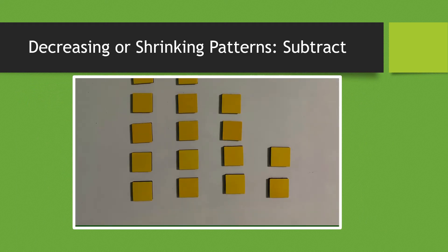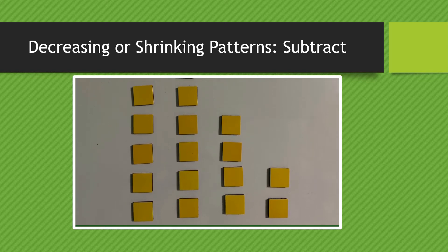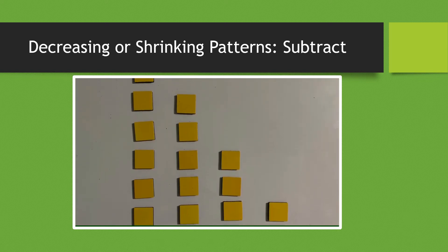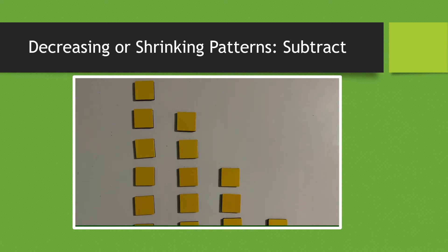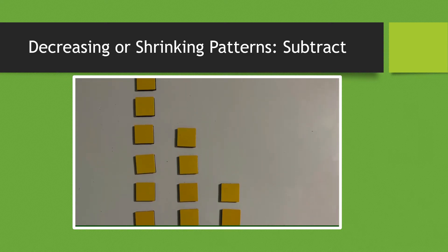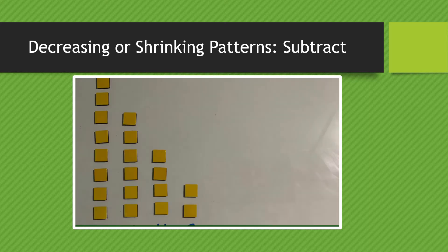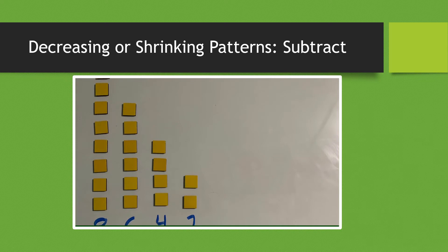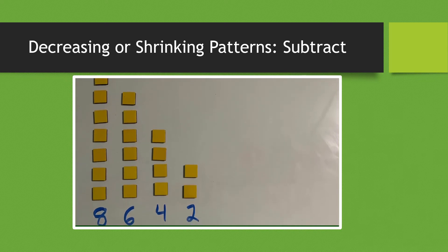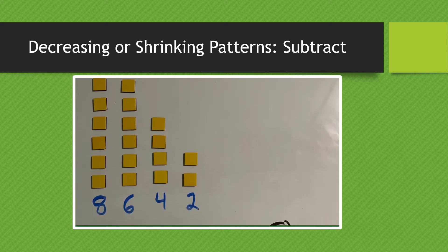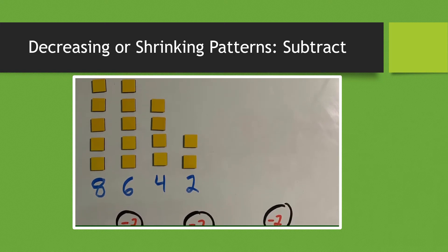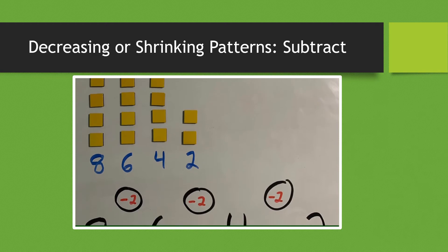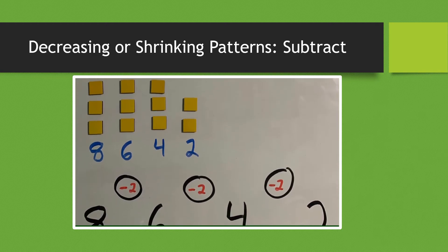Now we're going to look at decreasing or shrinking patterns. With this pattern, you start with a larger number and the number gets smaller as you go forward. For this example, we're starting out with eight blocks, then six, then four, then two. So this gives a gap of minus two — each time we move to the new number, we're subtracting two to get the next column. This is a decreasing pattern where we're subtracting two each time.